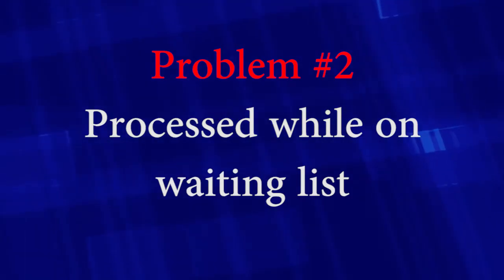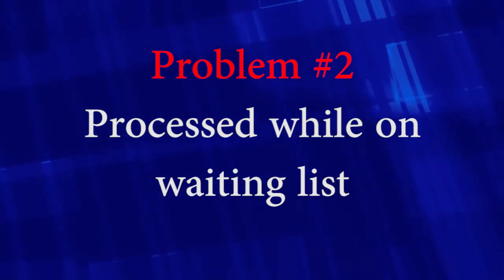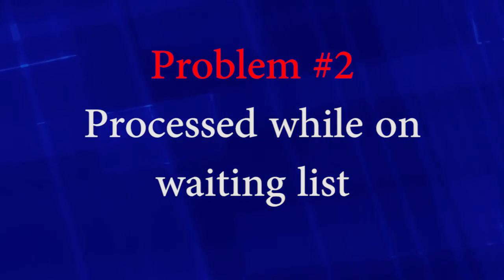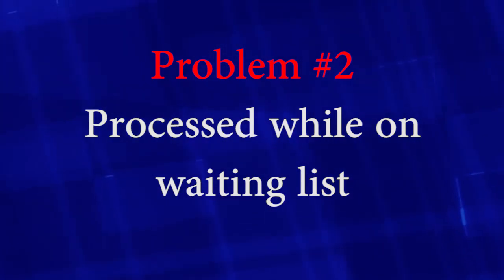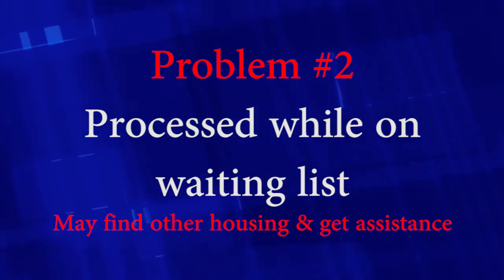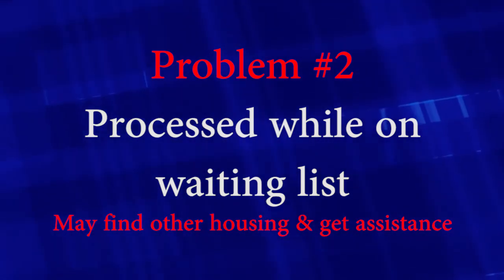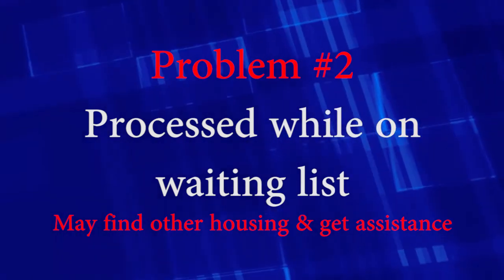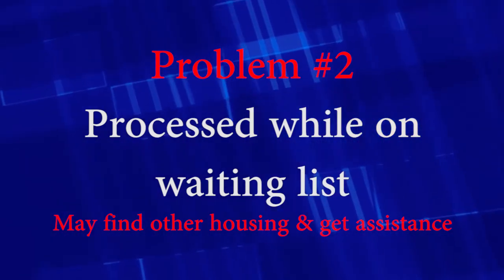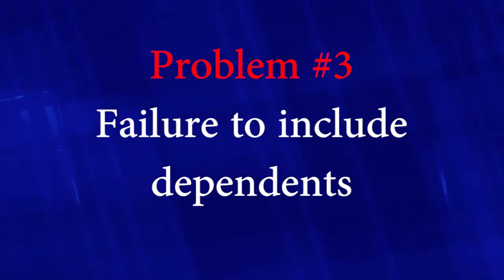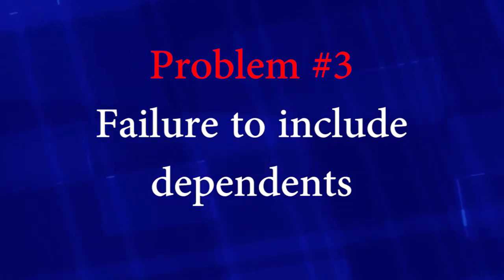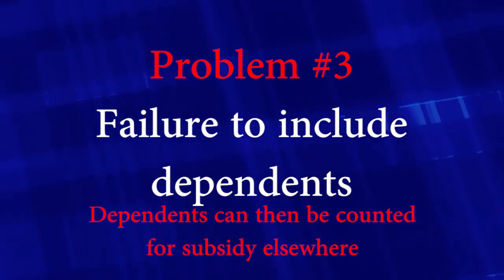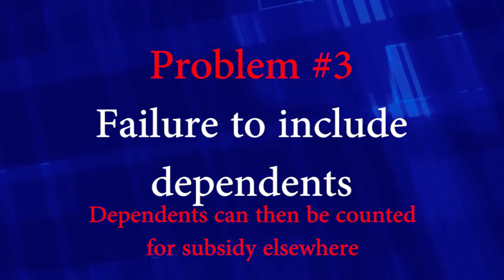Number two: processed when placed on the waiting list — too much time can expire and the applicant may be on assistance. Remember, they came to you looking for housing and their quest probably didn't stop with you. And number three: if the report is not run on all household members, the dependents can be counted in the subsidy of another property.